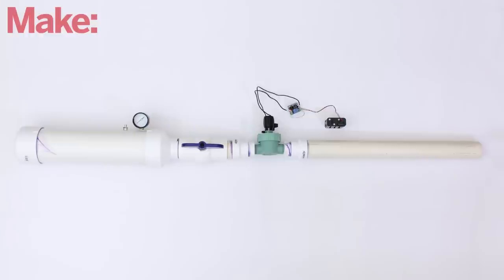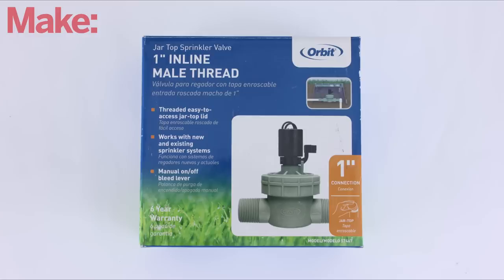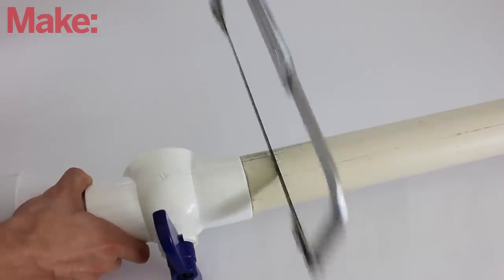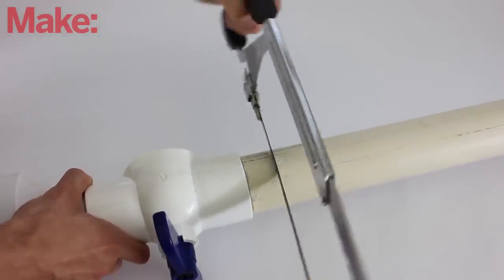To turn a regular air cannon into a remote controlled air cannon, all you need to do is add an electric sprinkler valve and a remote controlled relay. Start by cutting the barrel a few inches away from the manual valve.